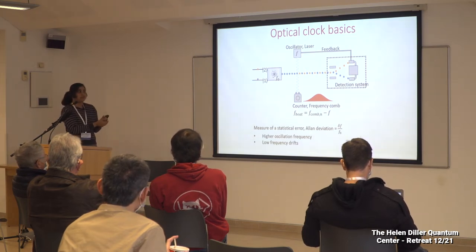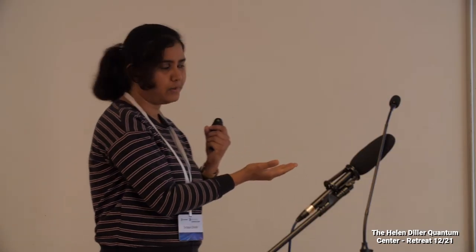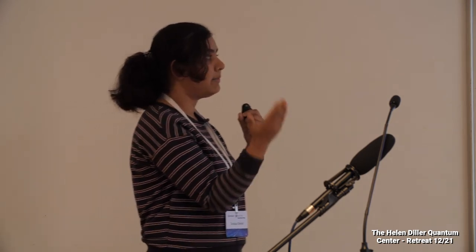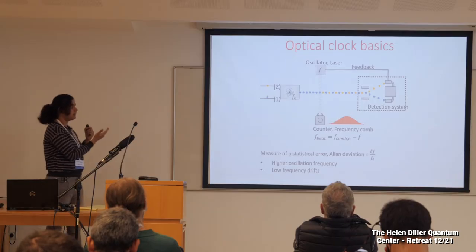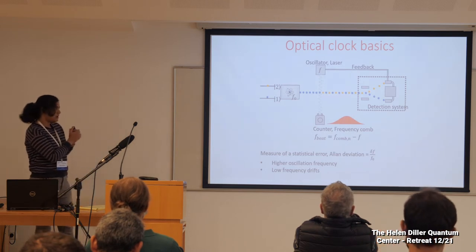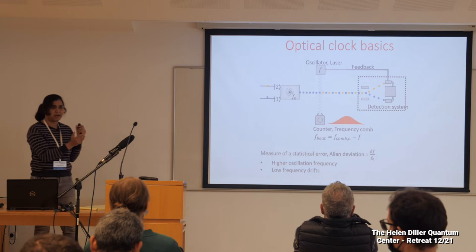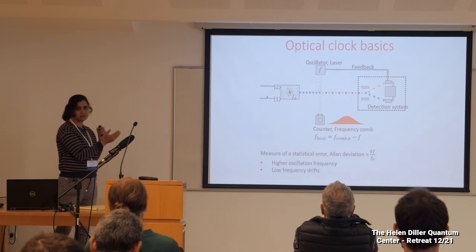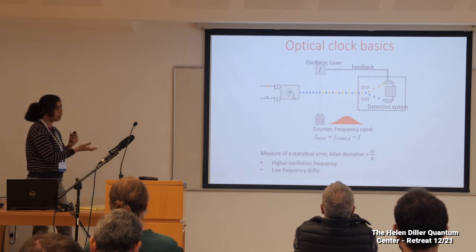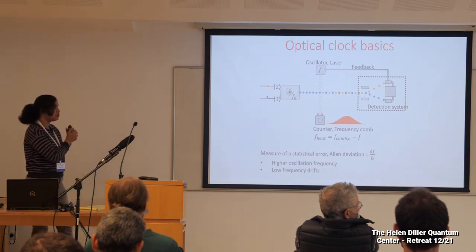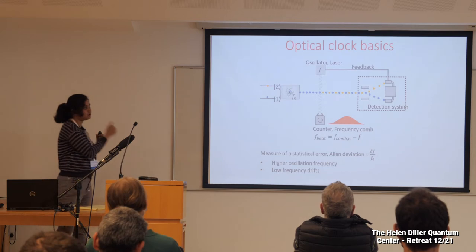Once we have a stabilized laser, we need to measure its frequency. The frequency comb comes into play here — we beat the laser with the nearest mode of the frequency comb, and by measuring the beat frequency we can calculate the frequency of the laser that interacted with the atoms. All optical clocks are characterized by the Allan deviation, which is the ratio of delta-F — the frequency fluctuation induced by measurement noise — to F0, the natural frequency. By choosing a higher oscillation frequency you can actually increase the stability.